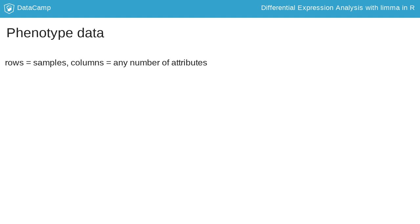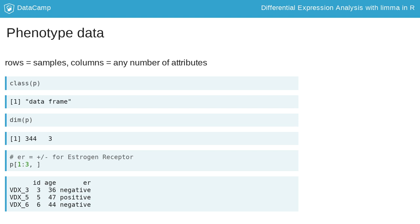The phenotype data is a data frame with one row per sample. Thus its number of rows is equal to the number of columns in the expression matrix. The columns describe the samples, in this case the sample identifier, the age of the subject, and whether or not the tumor sample was positive or negative for the estrogen receptor.